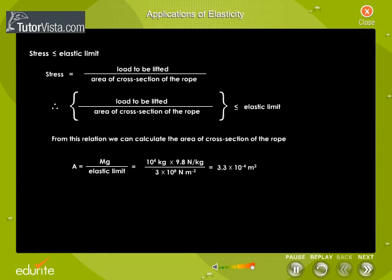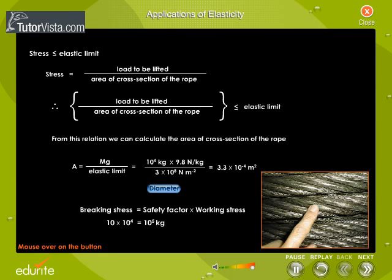The area of the cross-section of the rope should not be less than 3.3×10^-4 m². This corresponds to a diameter of about 2 cm for a rope of circular cross-section.